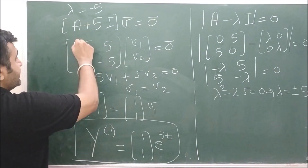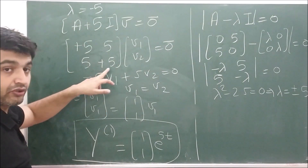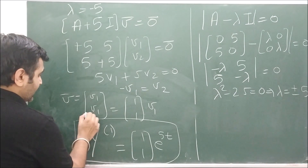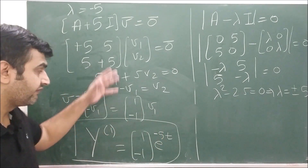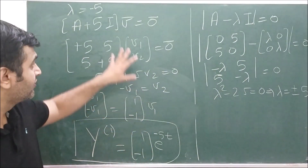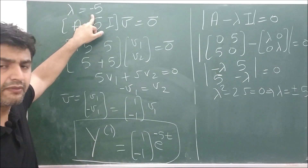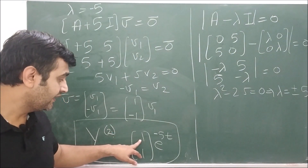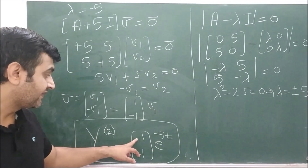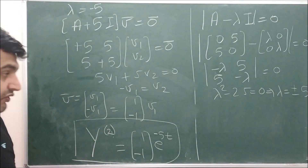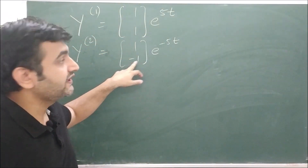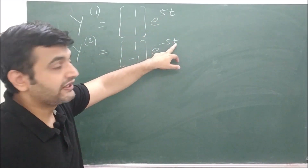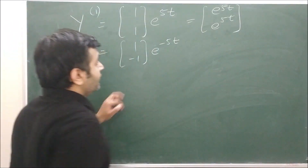For λ = −5, the matrix becomes [5, 5; 5, 5]. Applying R2 − R1, the second row becomes zero, giving 5v1 + 5v2 = 0, so v2 = −v1. The eigenvector is [1, −1]ᵀ. The second solution is y2 = [1, −1]ᵀ · e^(−5t), giving components e^(−5t) and −e^(−5t). So the two solutions are [1,1]ᵀ·e^(5t) and [1,−1]ᵀ·e^(−5t).